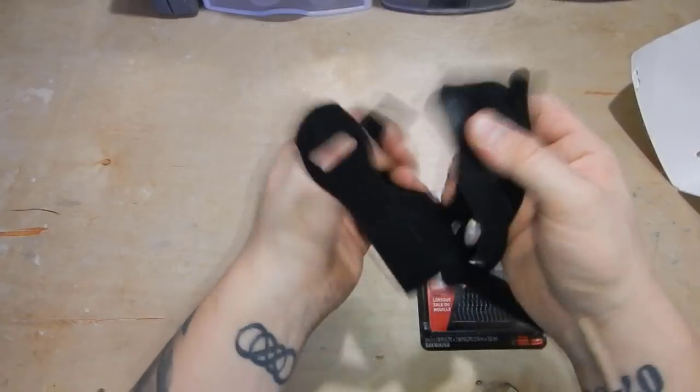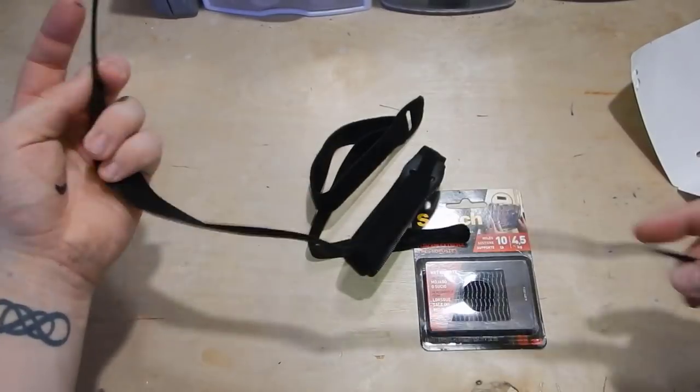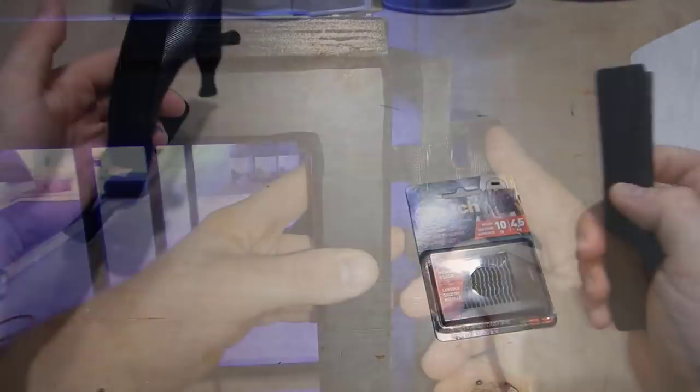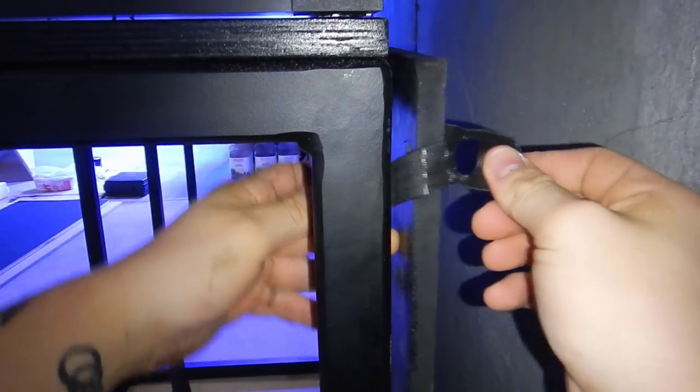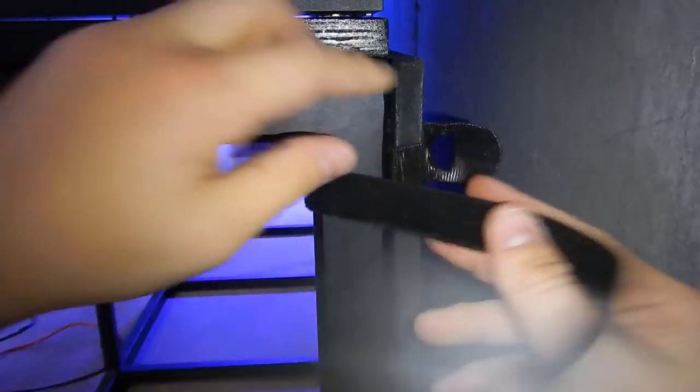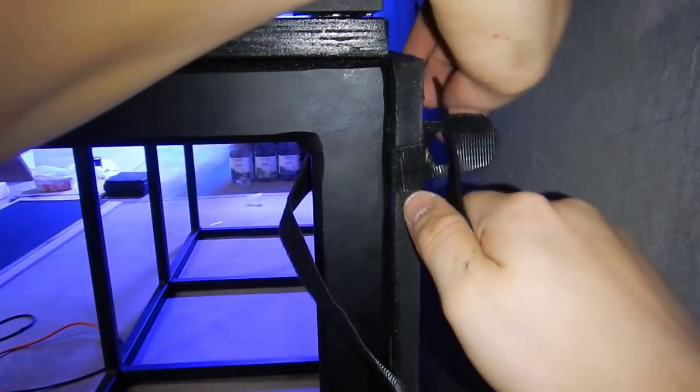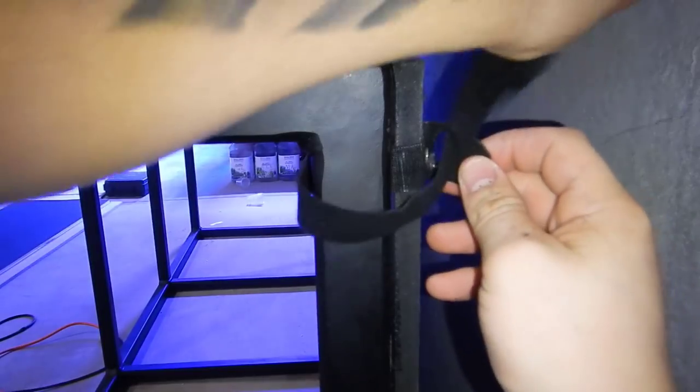I screwed these velcro ties into the plywood and then wrapped them around the steel stand and held them in place that way. It works out pretty good. I put one on each side as well as one in the middle where the drain lines are, and it was good to go.